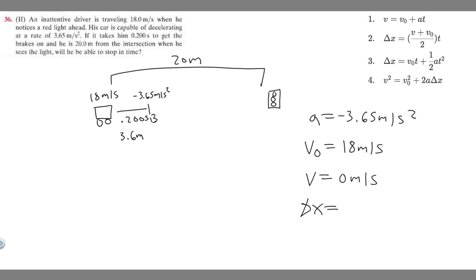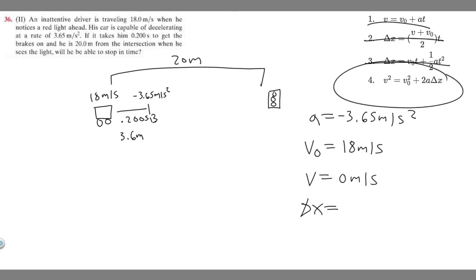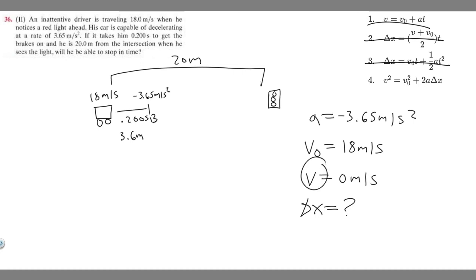Which kinematic equation do we use? Looking at the kinematic equations, they all have t in them — but we don't have time. So we'll use the equation v² = v₀² + 2aΔx, because it contains delta x (what we're solving for), v, v₀, and a, with no time variable needed.